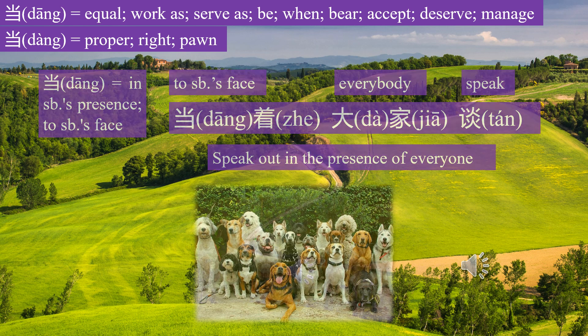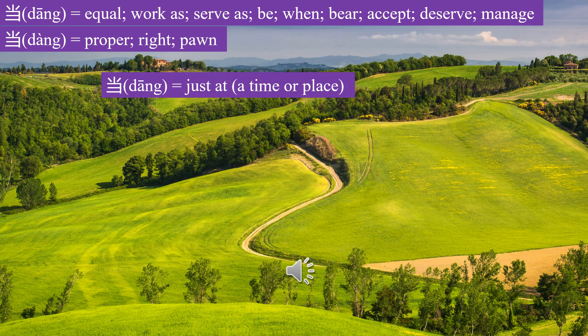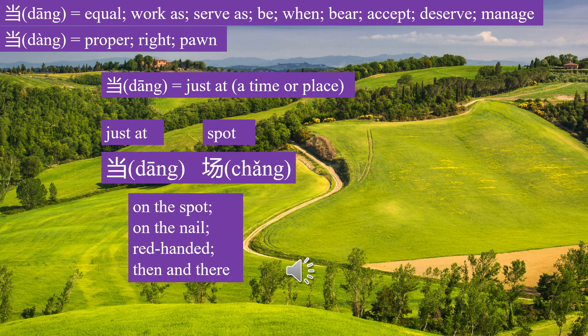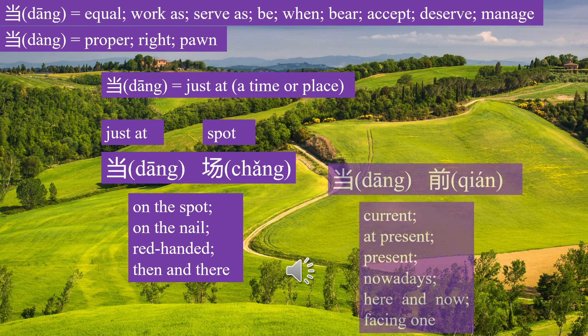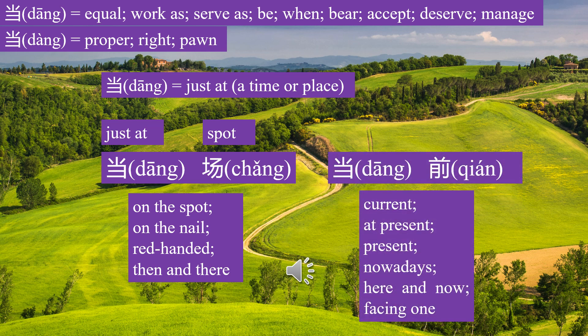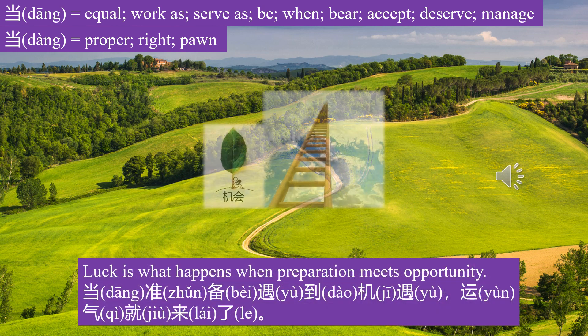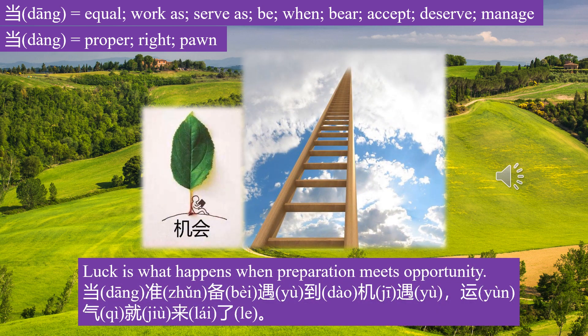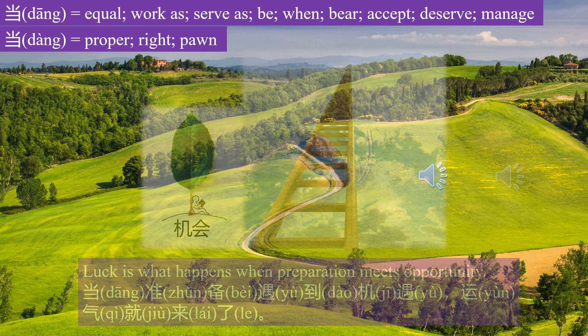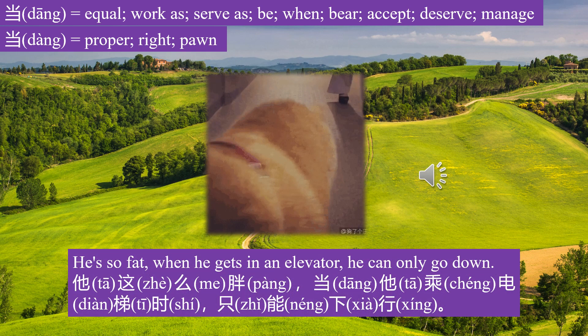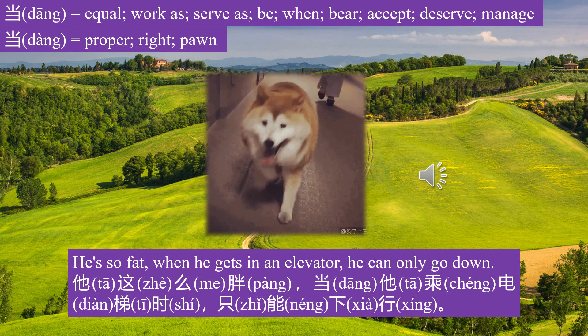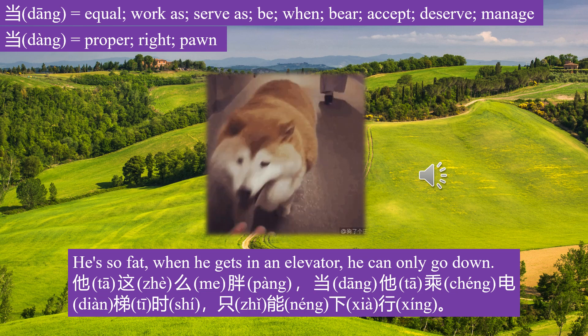当场 means on the spot. 当前 means current. Luck is what happens when preparation meets opportunity — 当准备遇到机遇，运气就来了.